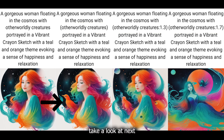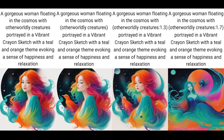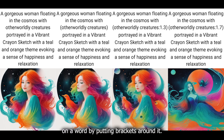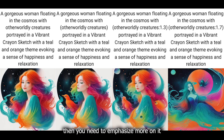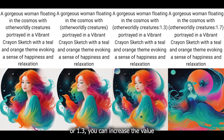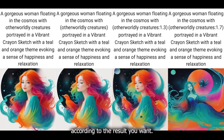Take a look at the next three examples. You need to emphasize on a word by putting brackets around it, and if it still isn't showing, then you need to emphasize more by putting numbers like 1.1, 1.2, or 1.3. Basically, you can increase the value according to the result you want.